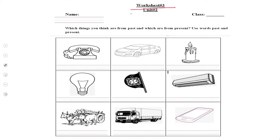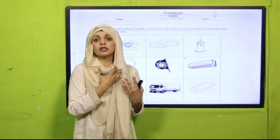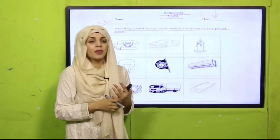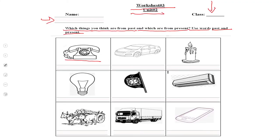Your teacher will provide you with a worksheet, or you can do it in your copy. Write your name and class in the blank. There are pictures — you will write whether things are from the past or the present. You can see a telephone, a car, a candle, a bulb, a hand fan, and an air conditioner. These old telephones are not used now — they were used in the past, so write 'past.' Cars are in the present, so write 'present.'